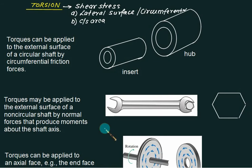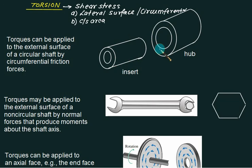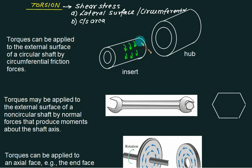For example, consider that we have one insert and one hub. When the insert is placed inside the hub we get the arrangement, and if we rotate this one then this will also rotate. In this case, the shear stress will be produced on this area, and it is producing on the circumferential area, that is called the lateral area.